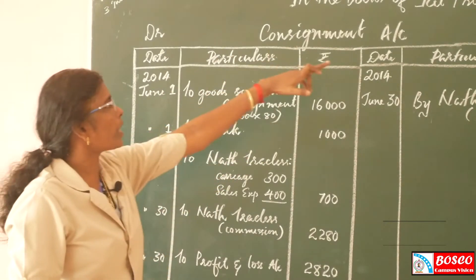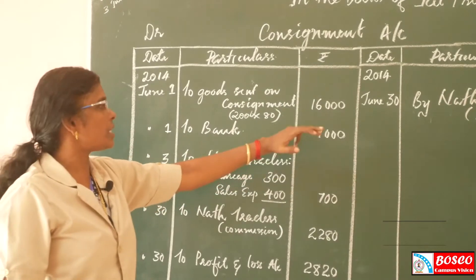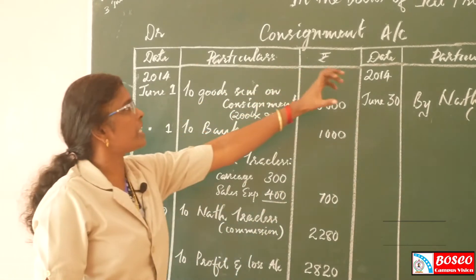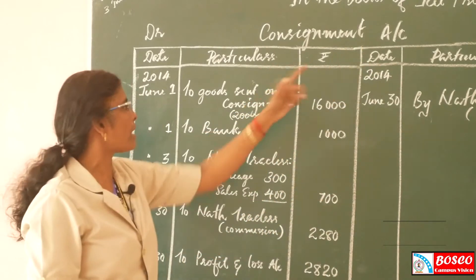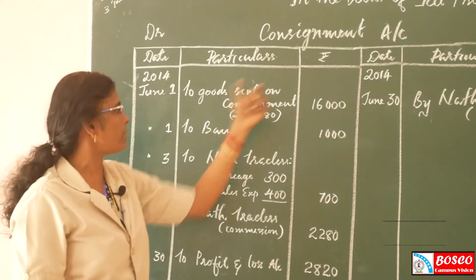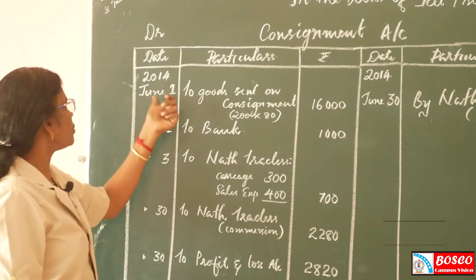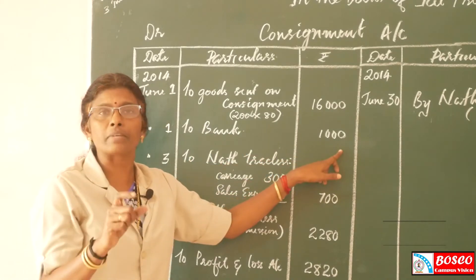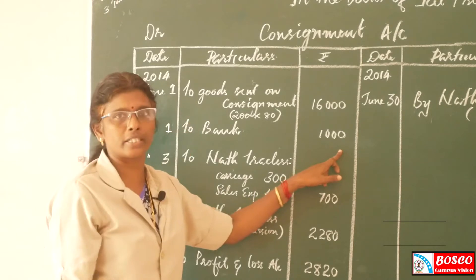The second item: J. Products spent Rs. 1,000 on freight, insurance, etc. These are expenses met by the consignor. The journal entry is: Consignment Account debit to Bank — Rs. 1,000 on 1st June, for expenses met by J. Products.